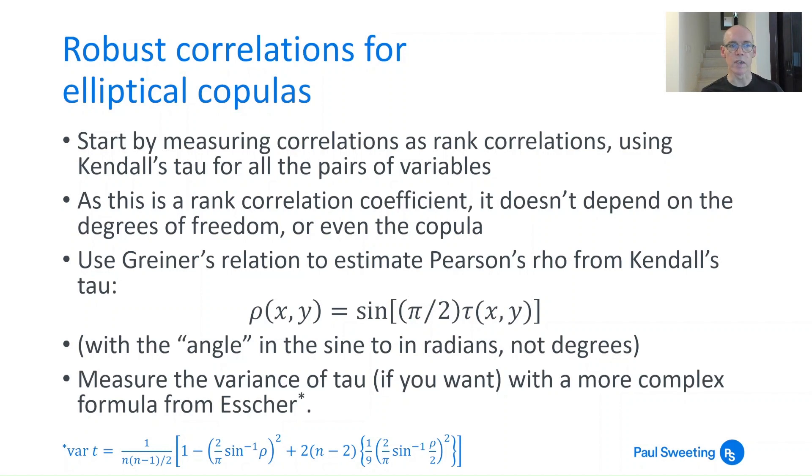You can then use something called Griner's relation to estimate Pearson's rho from Kendall's tau. And that is calculated as the sine of pi over 2 times the tau between x and y. And the angle that you're calculating here, applying the sine to, is measured in radians, not degrees. And if you want to know how far away or what a confidence interval of your value of tau is, then there's an even more complicated formula from Escher, which allows you to work out what the variance of tau is. So you can do something a little bit more robust than just calculating Pearson's rho on stretched or reshaped data.